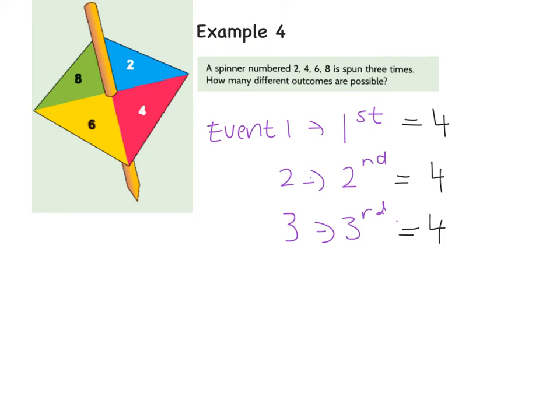This is when we would try and calculate how many different outcomes are possible. And the reality is, the first event has 4, the second event has 4, and the third event has 4. The fundamental principle of counting says that we multiply the chances of each event. And so we go 4 times 4 is 16, and 16 multiplied by 4 is 64. So there are 64 different outcomes when you spin this spinner 3 times.